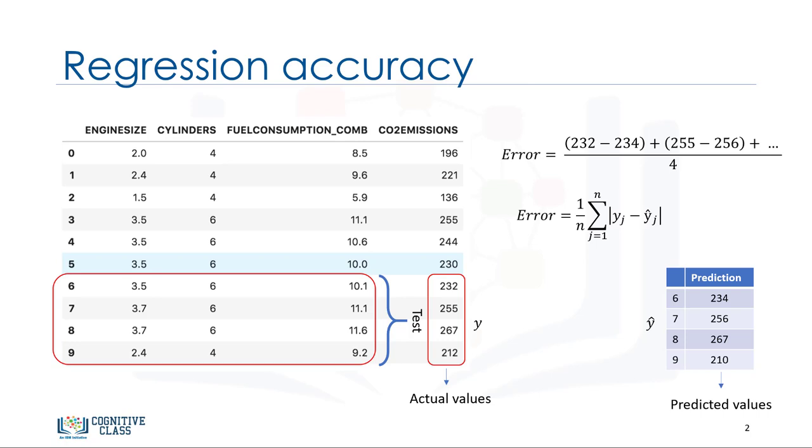As mentioned, basically we can compare the actual values and predicted values to calculate the accuracy of a regression model. Evaluation metrics provide a key role in the development of a model as it provides insight to areas that require improvement.